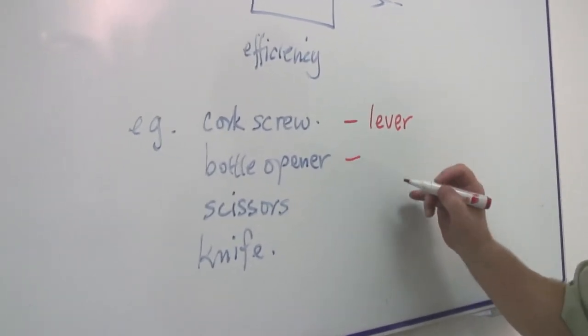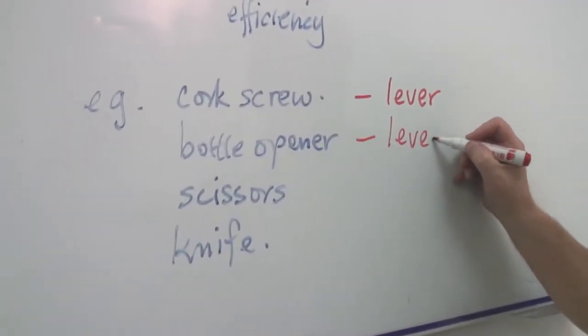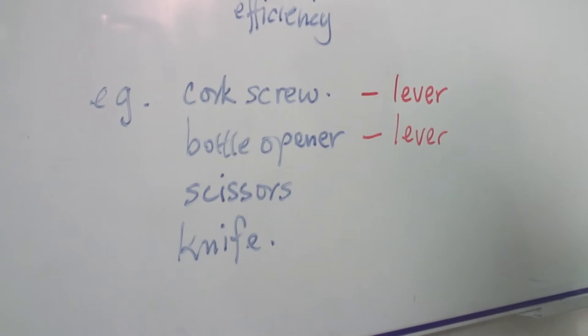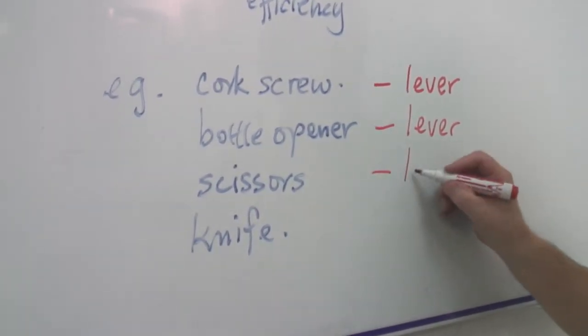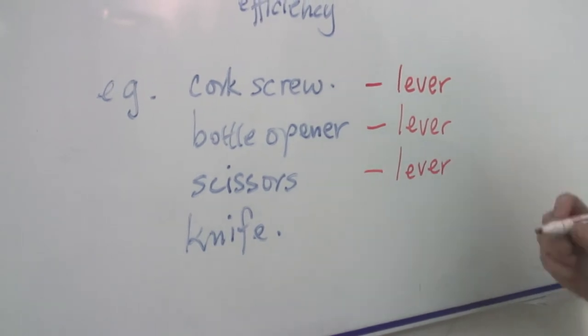Even simpler, a bottle opener is a pure lever system. And in fact, scissors are the same. These are different types of lever systems.